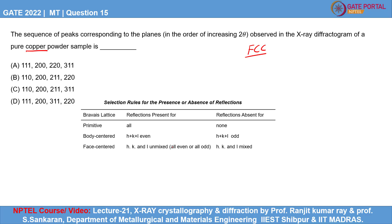So based on this criteria, if you look at the options: 111 — all are odd; 200 — all are even; 220 — all are even; 311 — all are odd. It represents an FCC structure.